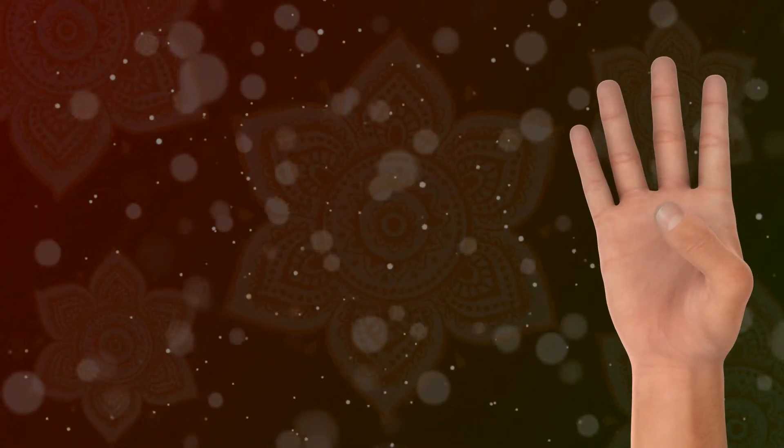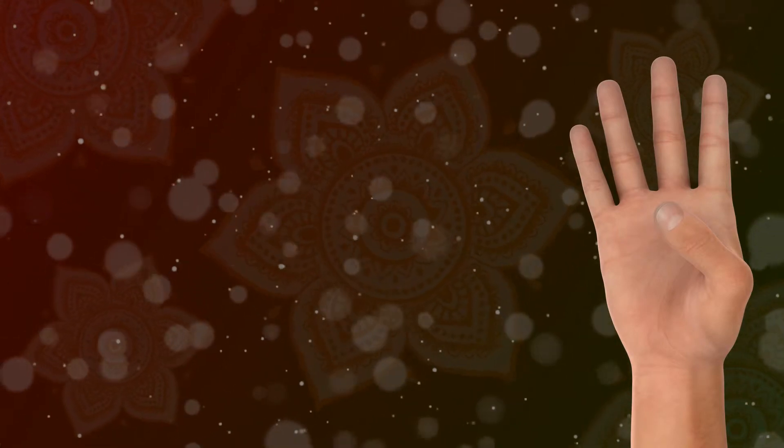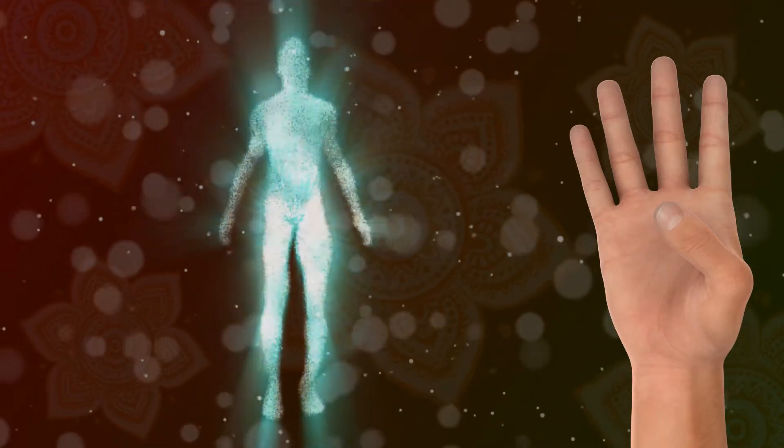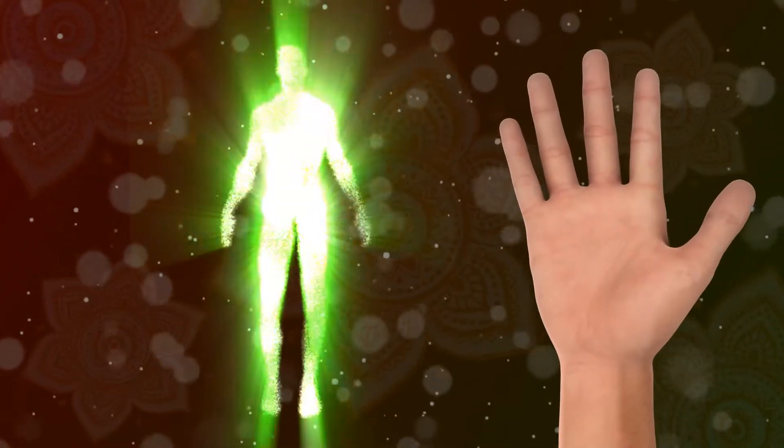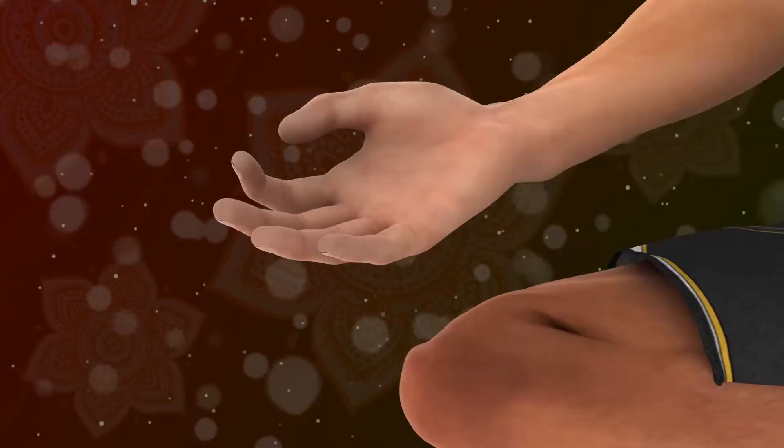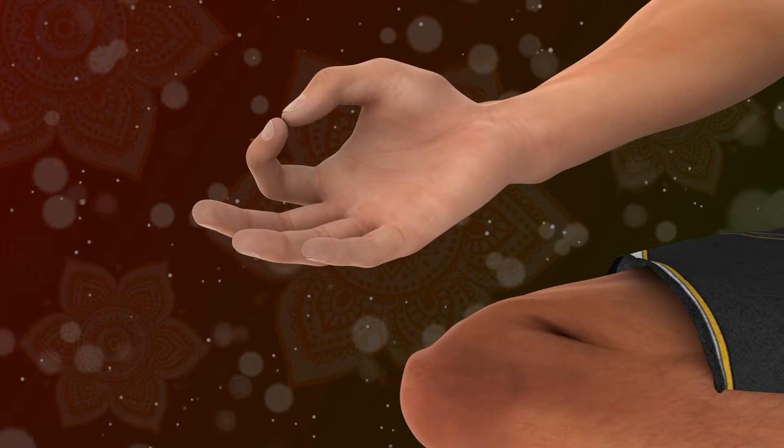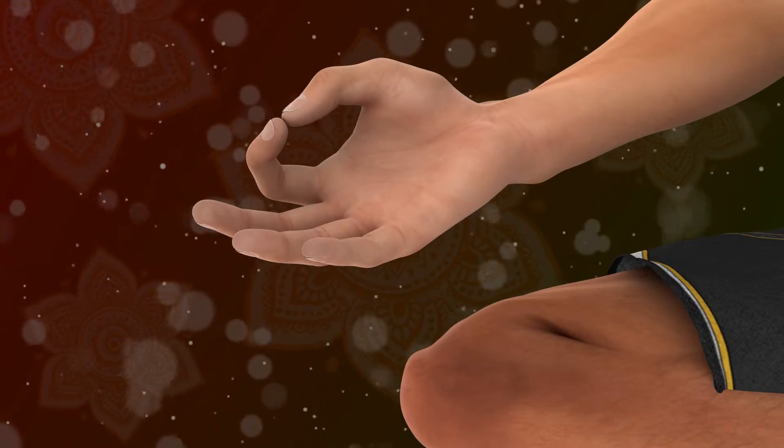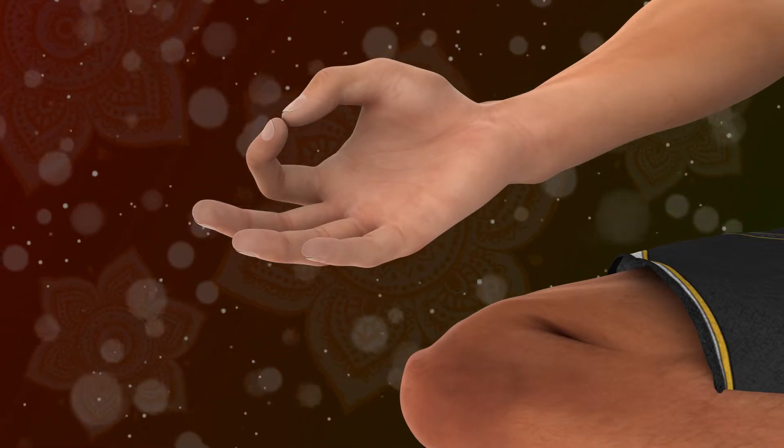The index finger represents individual consciousness, the Jivatma, while the thumb symbolizes supreme consciousness. In Gyan Mudra, the individual, which is the index finger, is bowing down to the supreme consciousness, which is the thumb, acknowledging its unsurpassed power.